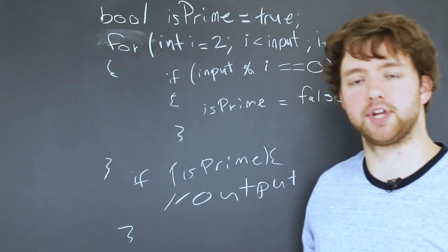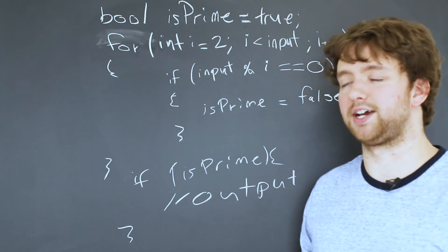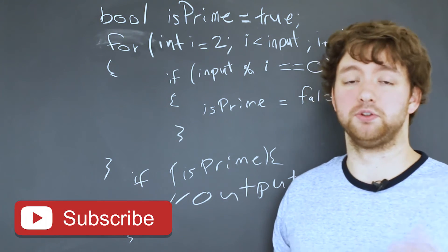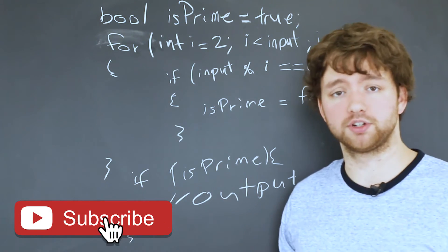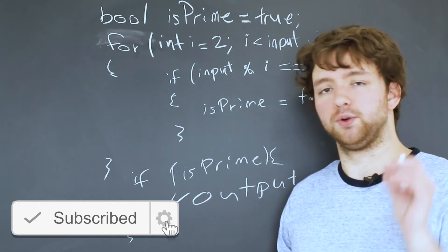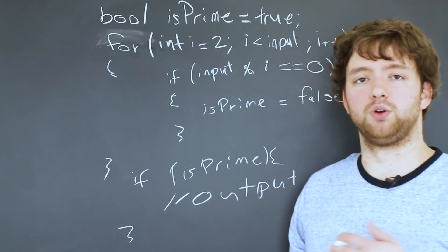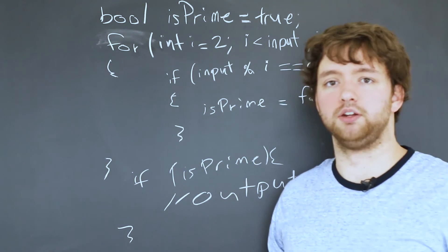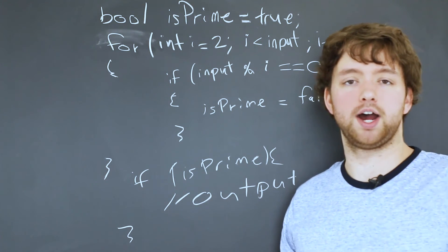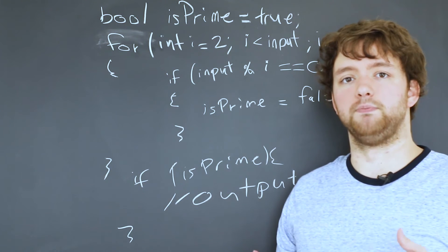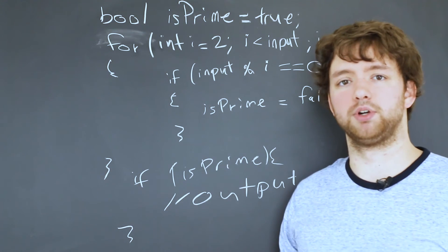Now there is one optimization that I know of. I'm honestly not going to worry about it, but if you were actually going to do this in production with large numbers, you would want to do it. There is a way to tell if a number is prime without going through all the numbers in between where you only have to go up so high. I think it's like the square root of the number.